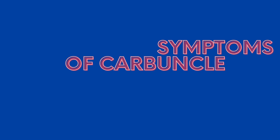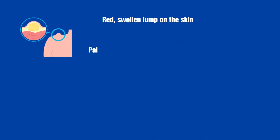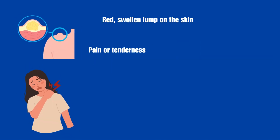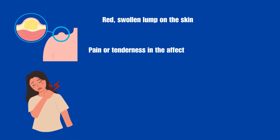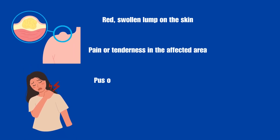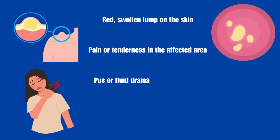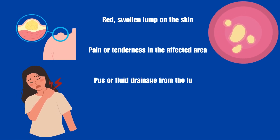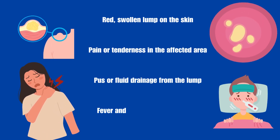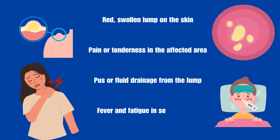Let's see the symptoms of carbuncle: a red, swollen lump on the skin; pain or tenderness in the affected area; pus or fluid drainage from the lump; and fever and fatigue in severe cases.